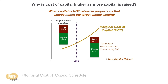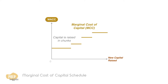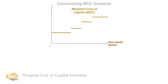Regardless of the reason, the bottom line is that raising additional capital generally results in an increase in the WACC. However, in reality, the marginal cost of capital does not follow a continuous line as shown. As capital is often raised in chunks, there should be a number of breaks. The marginal cost of capital schedule shows the WACC for different amounts of financing. Let's learn how to construct the marginal cost of capital schedule for a firm.